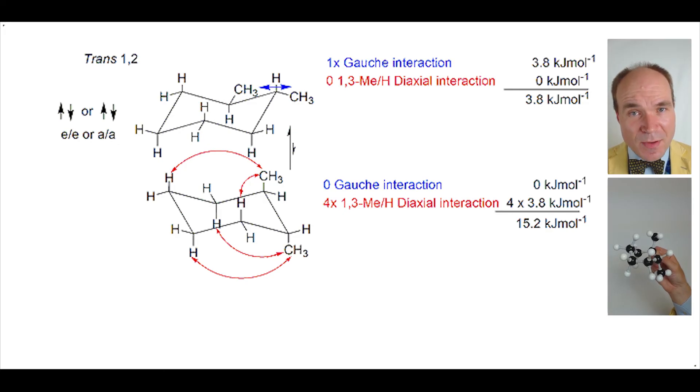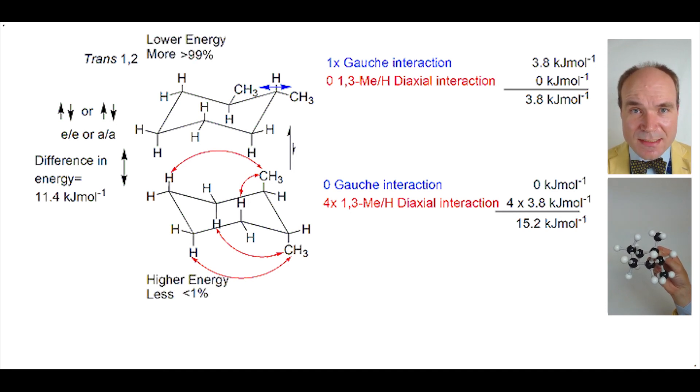So the upper chair has steric strain added of 3.8 kilojoules per mole. The lower chair has steric strain added of 15.2 kilojoules per mole. The difference is 11.4 kilojoules per mole, and this means the upper chair is greater than 99% present. There's very little of that lower chair because it is higher energy.